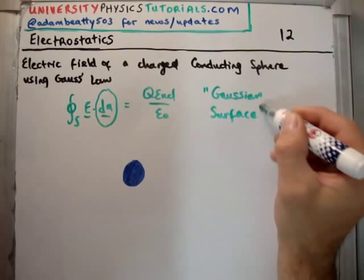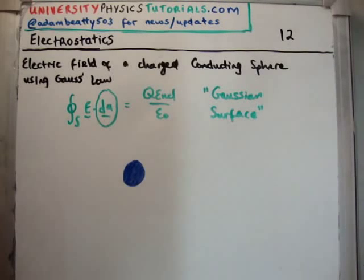The symmetry where we use Gauss's law is cylindrical symmetry, spherical symmetry, axial or linear symmetry, or planar symmetry. There is one more that I can't think of off the top of my head, but essentially, those are the only times that Gauss's law works.